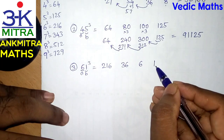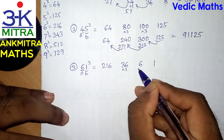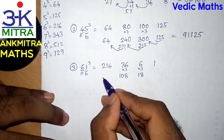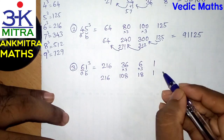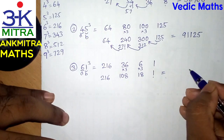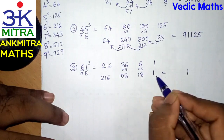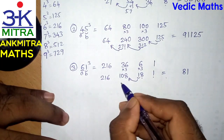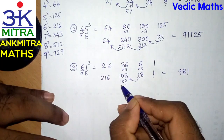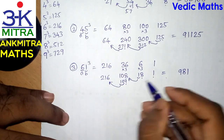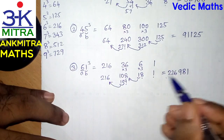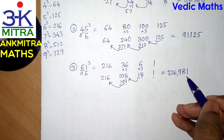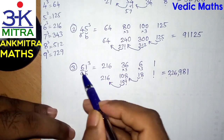This becomes very easy since the numbers are small. Multiply the middle two numbers by 3: 36 multiplied by 3 is 108, and 6 multiplied by 3 is 18. The end numbers 216 and 1 remain as they are. For the final answer: 1 goes to the units place. From 18, 8 goes to the answer and 1 is carried — 108 plus 1 is 109. From 109, 9 goes to the answer and 10 is carried — 216 plus 10 is 226. So the final answer for 61 cube is 226,981.